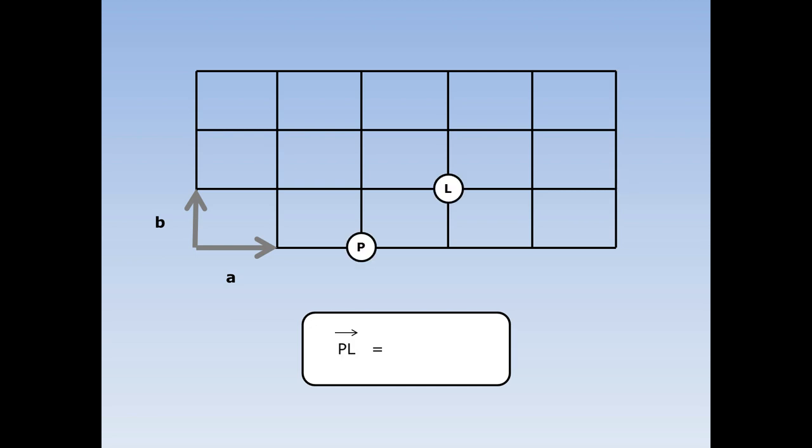How do I get from the park to the lake? I need to go along an A road and along a B road, so the answer is one A plus one B. Now I could have started by going up and then across. Whichever way I went, I would have got the same answer.